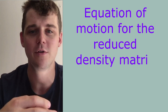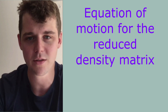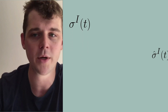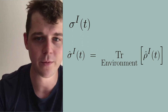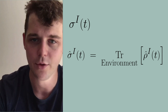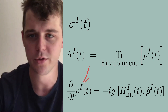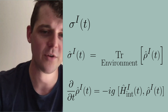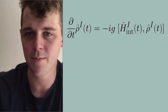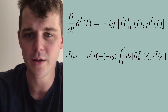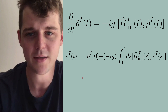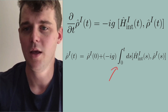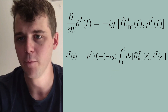What we're going to do is derive a master equation, which is essentially an equation of motion for only the reduced density matrix sigma of i. We're going to derive this equation of motion from the underlying von Neumann equation. One version of the von Neumann equation has the rate of change of rho of i proportional to a commutator — this is in the interaction picture. We also had another version written in integral form, where we pick some initial state rho of i at time t equals zero, and on the right-hand side we have an integral over this commutator, with rho of i of s being integrated from zero to t.